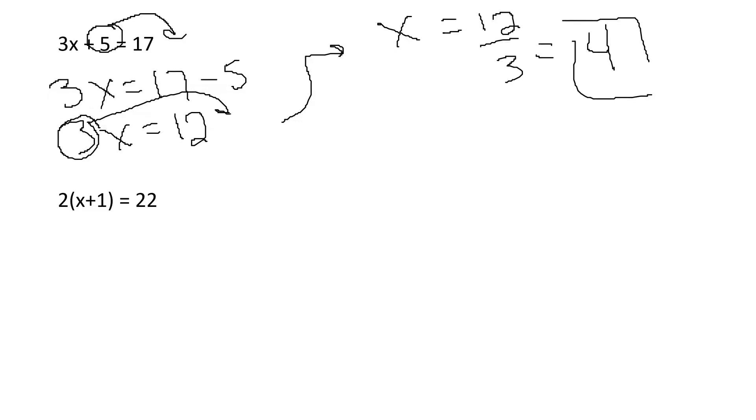All right. Now let's look at this one. Order of operations says we start inside my parentheses. I can't do anything, so I look outside. There is a 2 there, so I need to distribute that 2 into my parentheses. 2 times x is 2x. 2 times 1 is 2. And now I just start moving things away from the x. I'm going to move my plus 2 over. It's going to become minus 22 minus 2. So 2x equals 20.